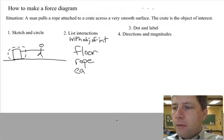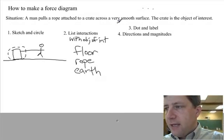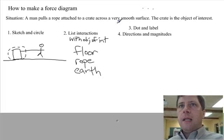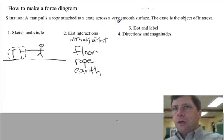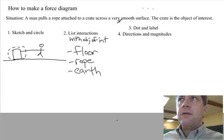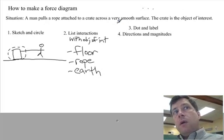The Earth, through the force that we call gravity, pulls on everything near to it. So let's check. Is there anything else touching? No. Anything else interacting? No. So we have one, two, three objects interacting with the object of interest. Cool. That's one of the hard parts of the force diagram.